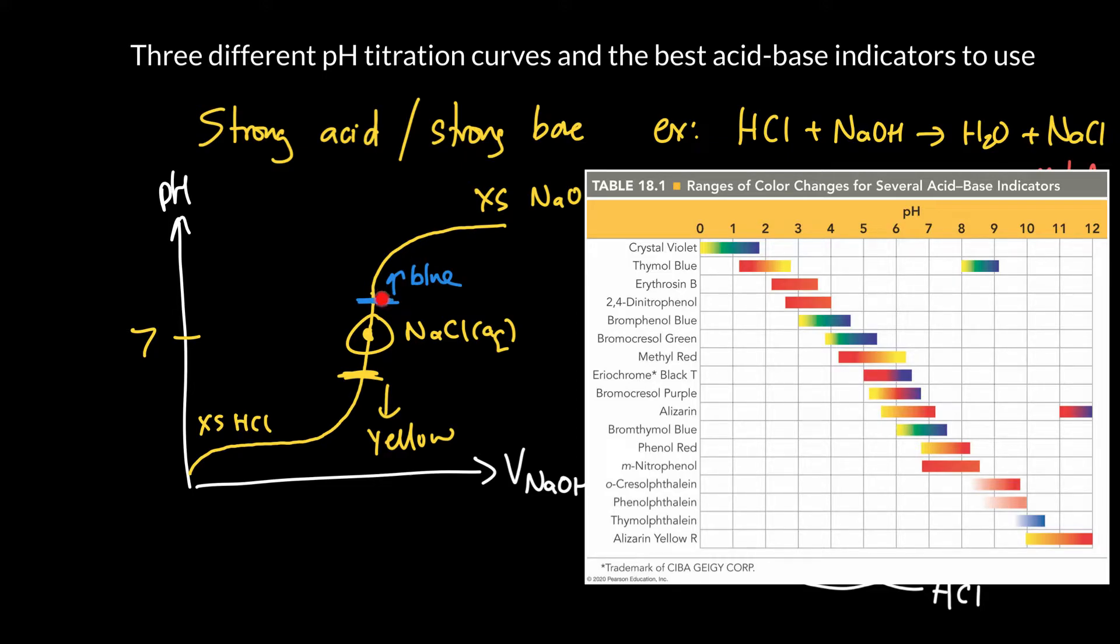I'd probably overshoot slightly so I would end up probably with a blue color just a smidge past the equivalence point. But it's so steep here the difference between the neutralization point and the end point is going to be tiny, tiny, tiny, probably can't tell at all. So let's look at what happens if you start with a weak acid and a strong base and then we'll finish it off with a weak base and a strong acid.